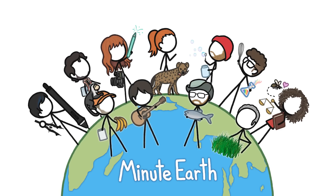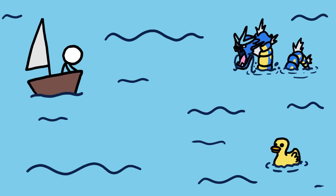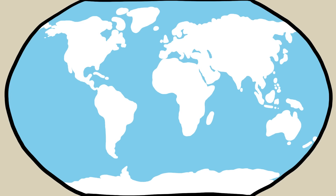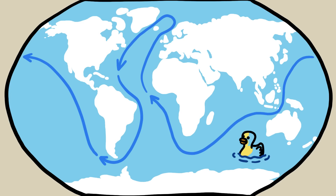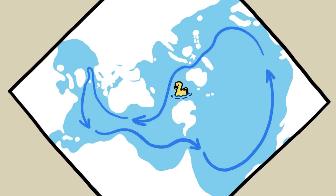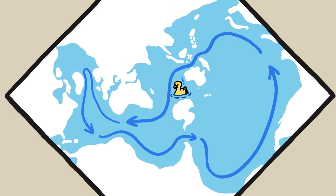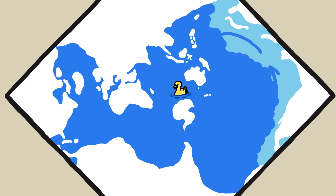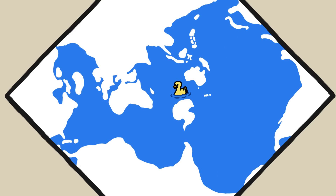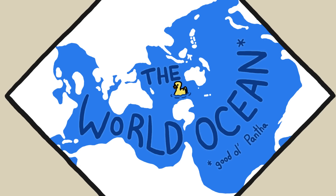Hi, this is Kate from MinuteEarth. Earth's ocean water — all 140 million-ish square miles of it — is all interconnected, which becomes really clear when you look at the world like this. Technically, our planet only has one ocean: the giant, not-so-creatively-named World Ocean.